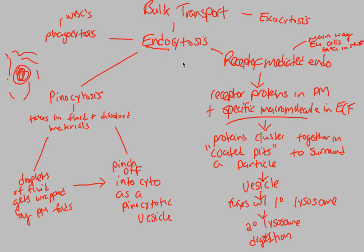This vesicle formation is the hallmark of endocytosis — it occurs in pinocytosis, phagocytosis, and even exocytosis. Once a vesicle is created, that confirms you are doing bulk transport. The proteins themselves aren't simply allowing something to flow through, as in receptor-mediated active transport. Instead, a vesicle forms, fuses with a lysosome to create a secondary lysosome, and leads to digestion.